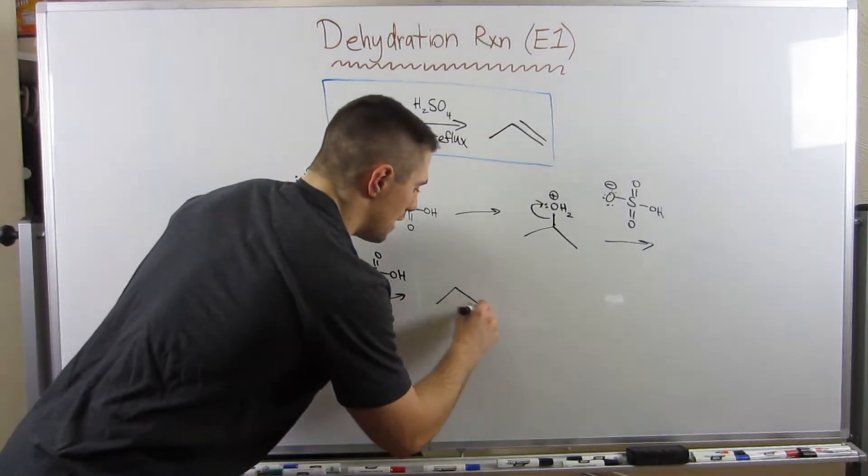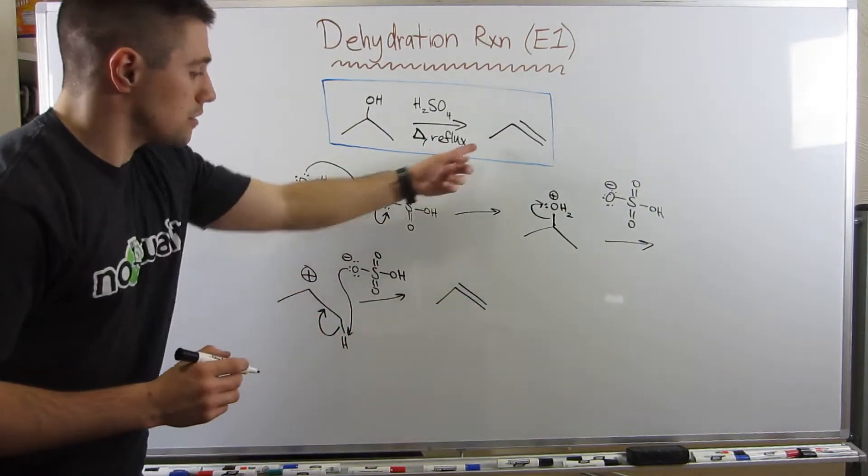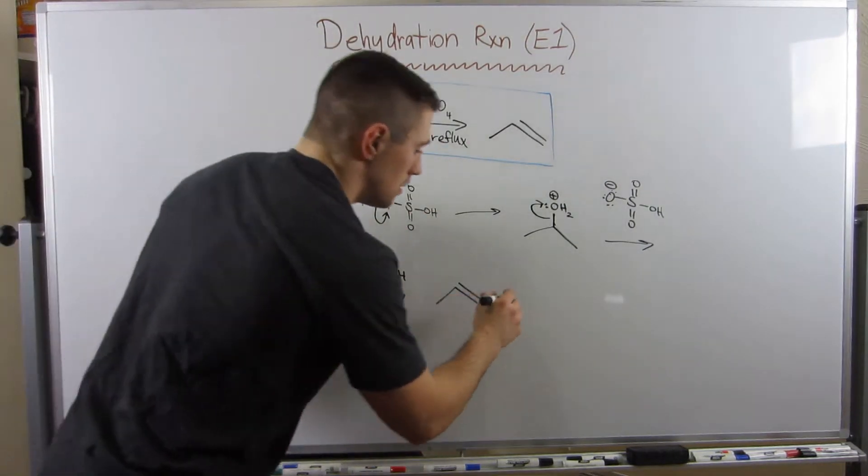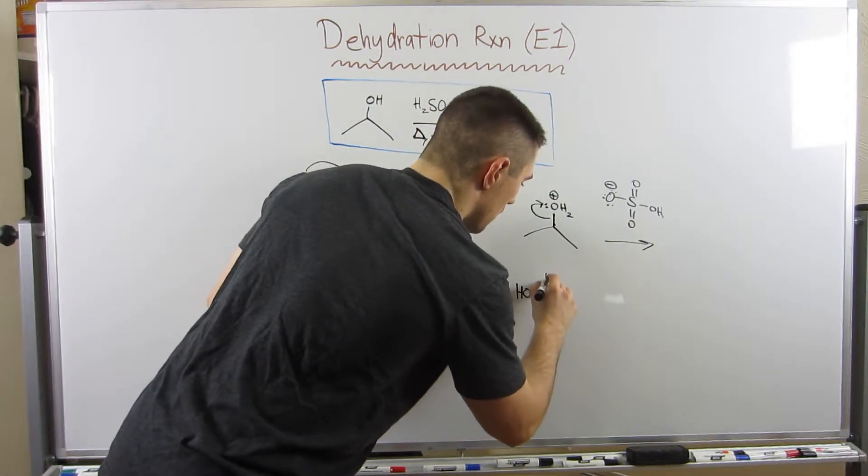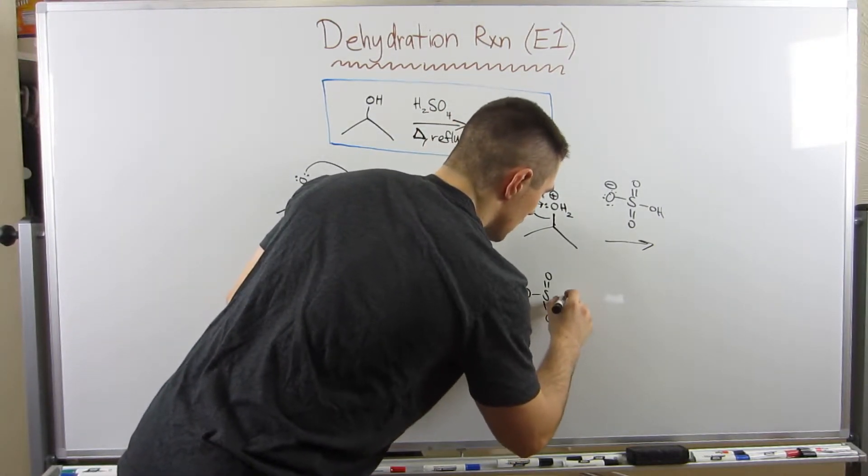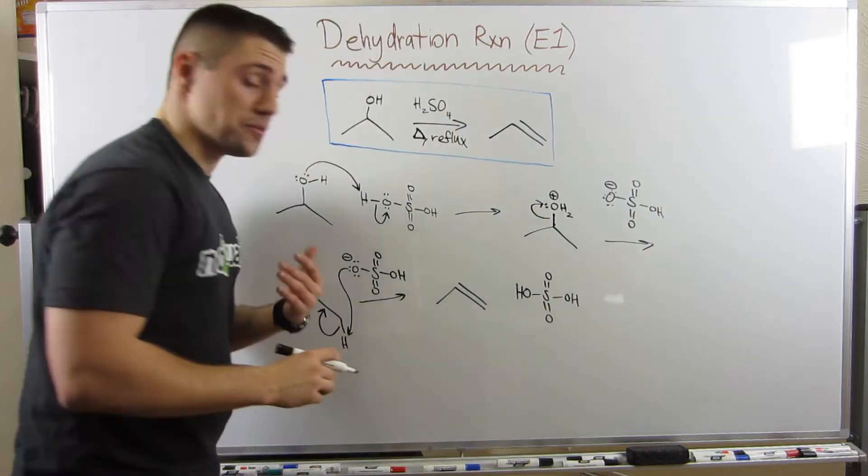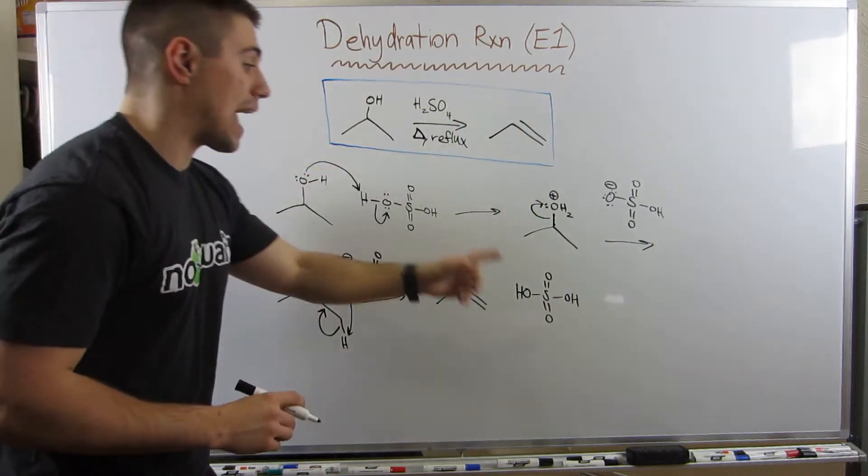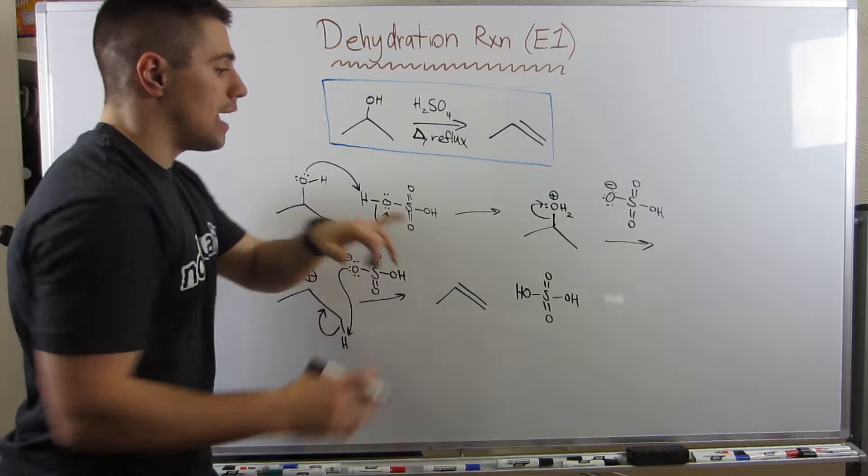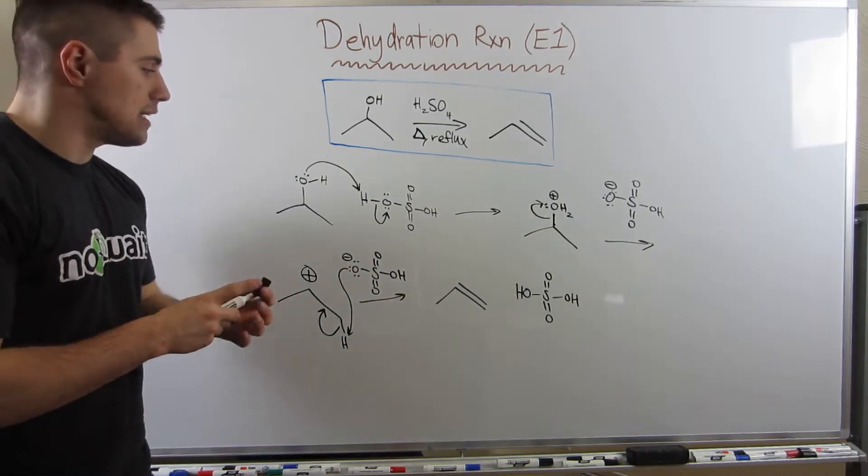This conjugate base comes back and what he's going to do is he's going to steal a hydrogen to make the more substituted double bond. Here we have a symmetrical situation, so it doesn't matter. So this sulfuric acid, it's catalyzed. It's an acid catalysis. Remember, catalysts aren't consumed in your reaction. So we started out with it.